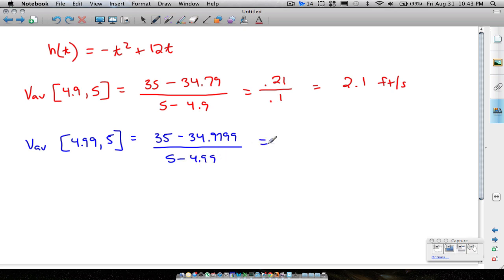So doing this, we have 0.0201 over 0.01, and we get 2.01 feet per second. Notice we're getting really close, our time interval is really small, from 4.99 seconds to 5 seconds. And look at this number, it's not really changing too much.